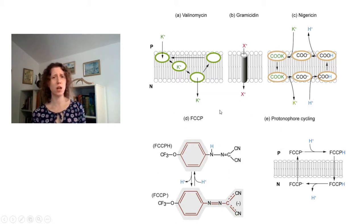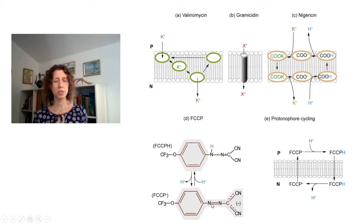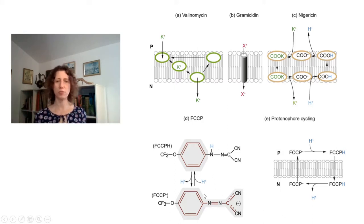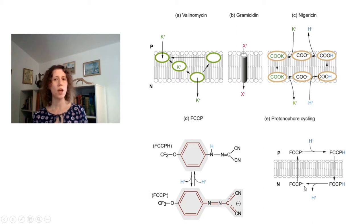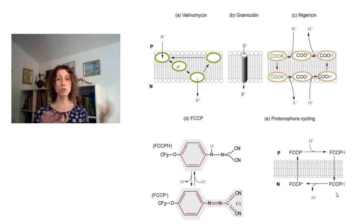Proton ionophores are widely used in mitochondria, and perhaps the most used today is FCCP. These are large lipophilic molecules that can be reversibly protonated. When protonated or not, the charge difference is masked by the overall lipophilicity of the molecule, so it can cross the membrane both with and without a proton. This creates a short circuit in the proton circuitry, uncoupling ATP synthesis from the electron transport chain — increasing electron transport and decreasing ATP synthesis.